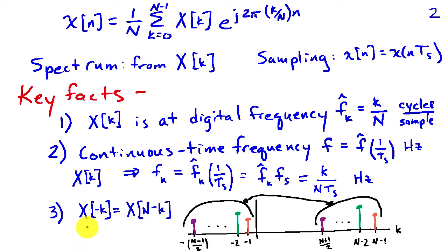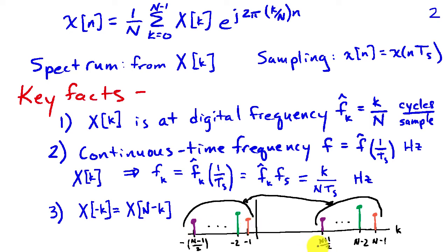Another fact we'll make use of is that the DFT coefficient x of minus 1 is equal to x of N minus 1, and similarly x of minus 2 is the same as x of N minus 2. This picture shows how these coefficients map to negative indices for k. The picture assumes N is odd. As we conventionally draw the spectrum in terms of negative and positive frequencies, the negative frequency information is embedded in the upper half of the DFT coefficients.